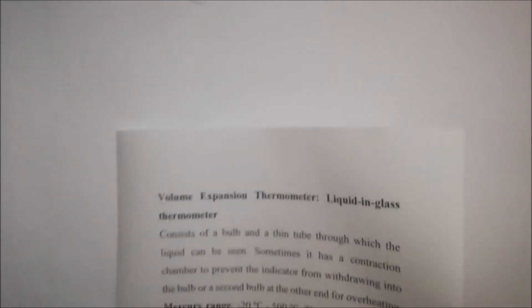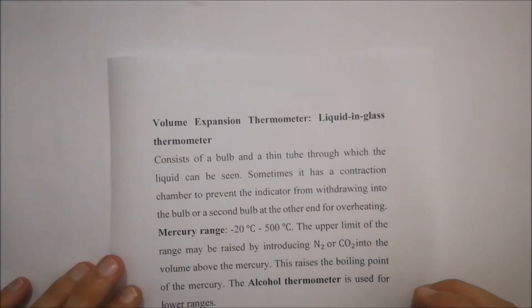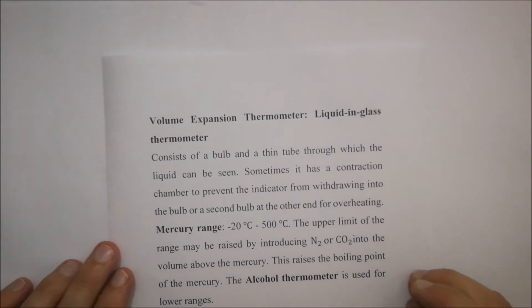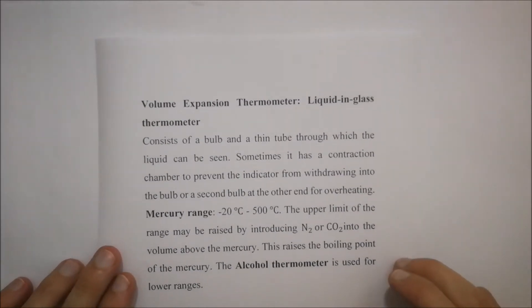Then we're going to be looking at volume expansion thermometer, liquid and glass thermometer. It consists of a bulb and a thin tube through which a liquid can be seen. Sometimes it has a concentration chamber to prevent the indicator from withdrawing into the bulb or a second bulb at the other end for overheating. Your mercury ranges from minus 20 degrees Celsius all the way up to 500 degrees Celsius.